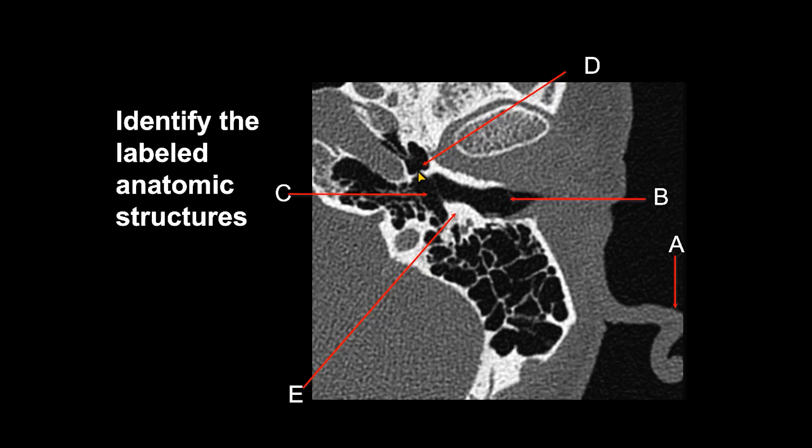D is the anterior epitympanic space — a portion of the middle ear cavity residing further anterior. E represents the bony portion of the external auditory canal.